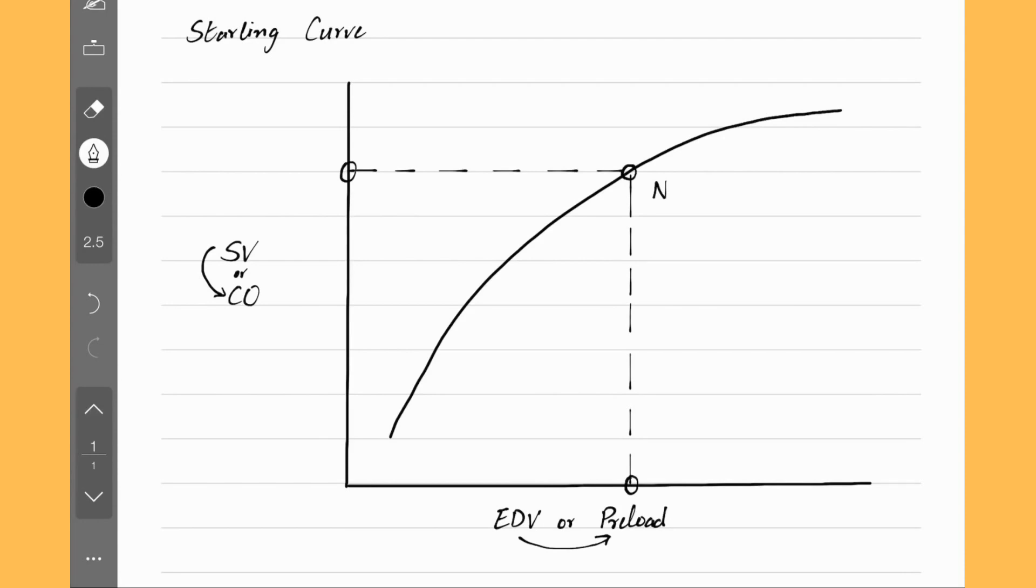As per the graph, we can change these conditions. Let's say we increase preload by putting more blood into the heart. So what's the effect? Increased cardiac output. So increasing preload increases cardiac output. For example, giving someone normal saline.